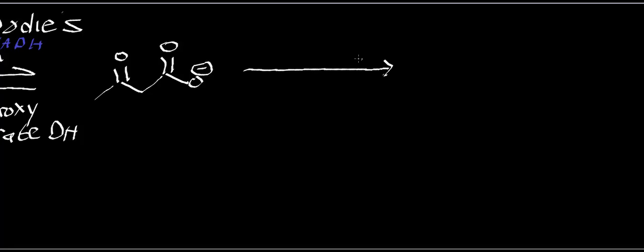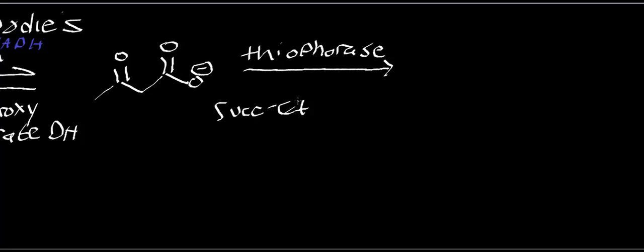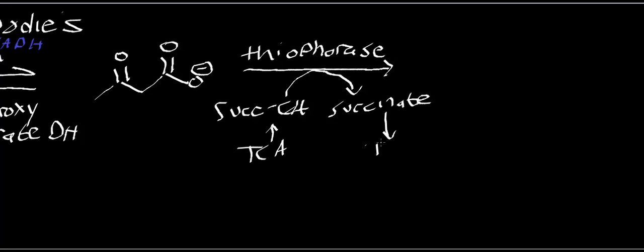Acetoacetate is catabolized by an enzyme called thiophorase, also known as beta-ketoacyl-CoA transferase. The coenzyme A doesn't come from acetyl-CoA — it actually comes from succinyl-CoA, which comes out of the TCA cycle. Succinyl-CoA comes in and kicks off succinate, which goes back into the TCA cycle.